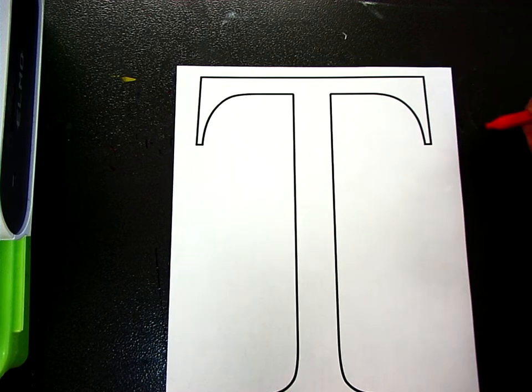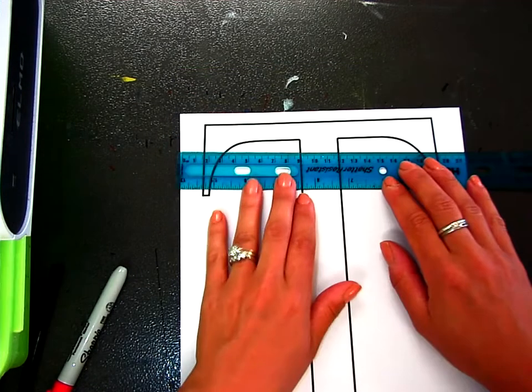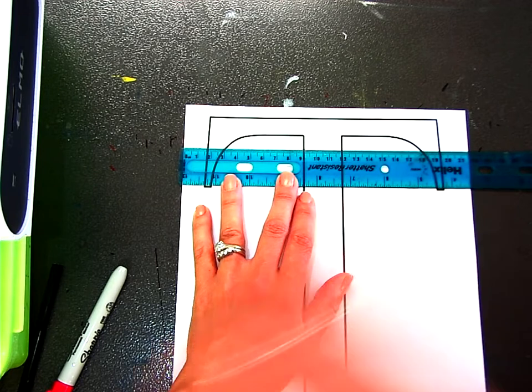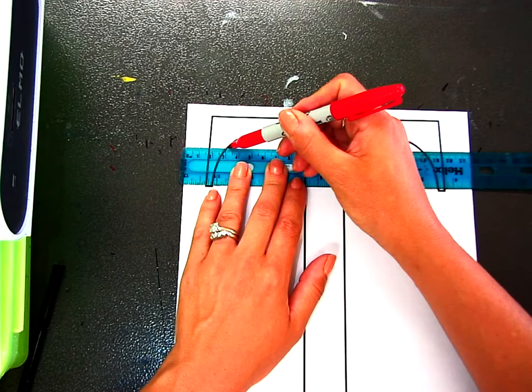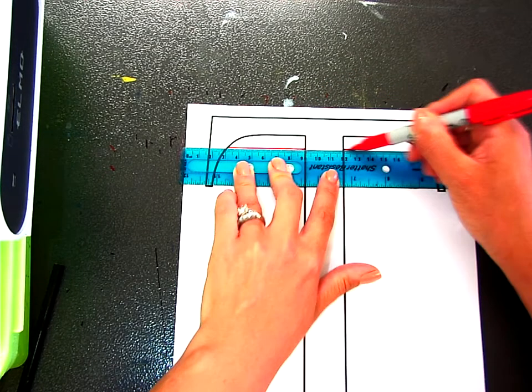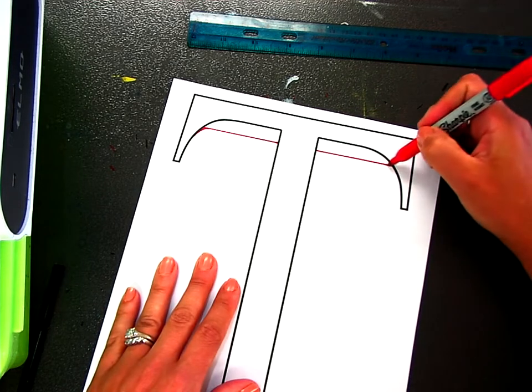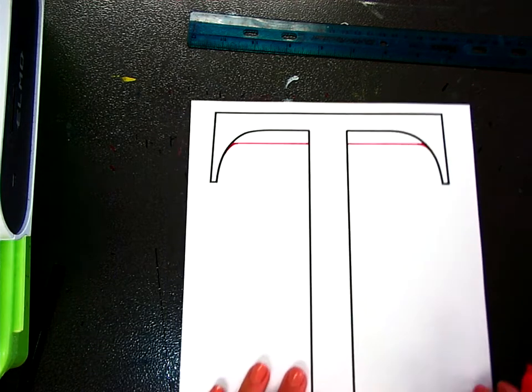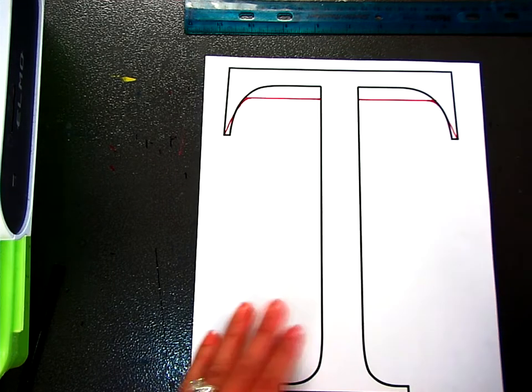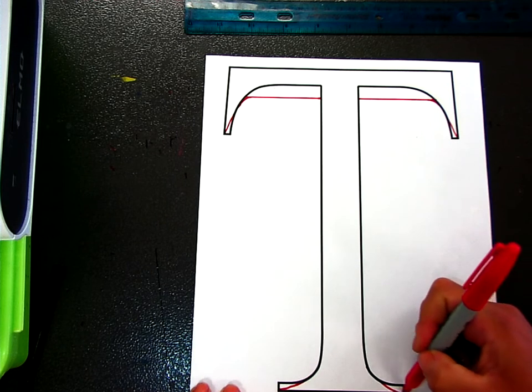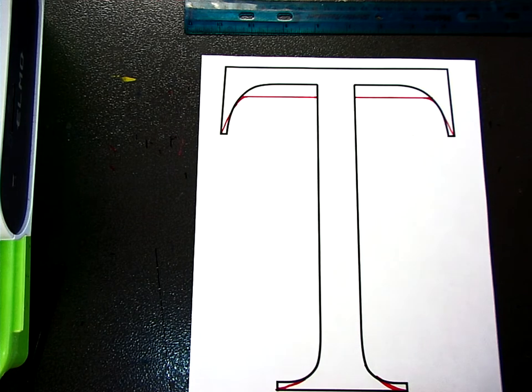So the first thing I'm going to do is take my ruler and I'm just going to make this a little bit thicker. I'm going to use a sharpie, get it as straight as I can. There we go. And I can round this a little. Then each corner I'm going to come down and make into a point just like that.